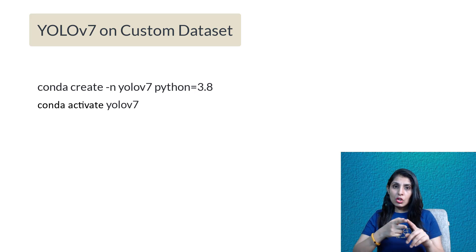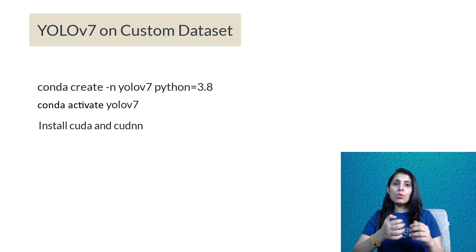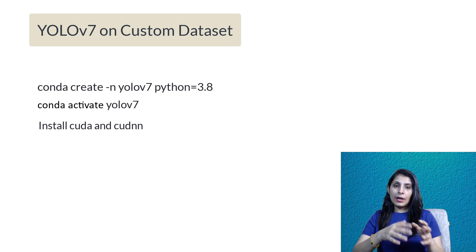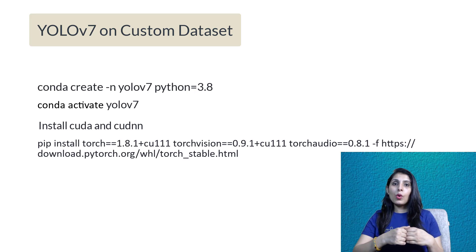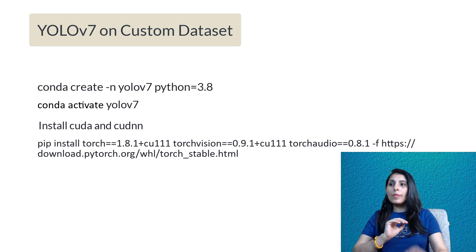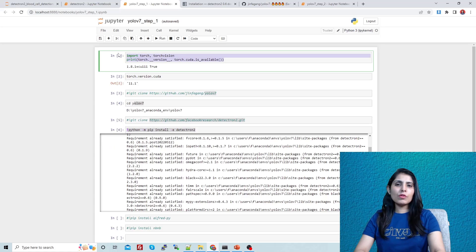Make sure you have installed CUDA and a compatible cuDNN version. The CUDA version I'm using is 11.1. Install PyTorch with CUDA compatibility — I've installed PyTorch version 1.8.1 with CUDA 11.1. In this notebook, you can see I'm first checking the torch version: my PyTorch version is shown, and CUDA is 11.1.